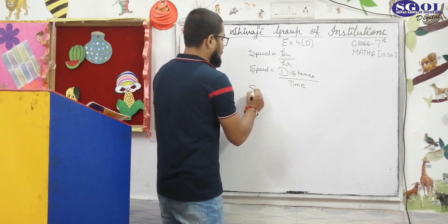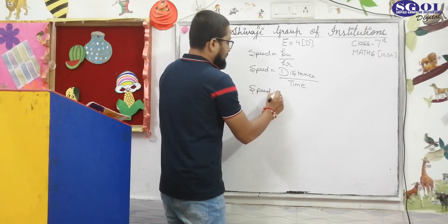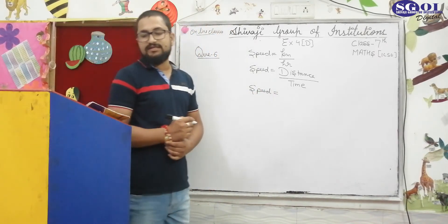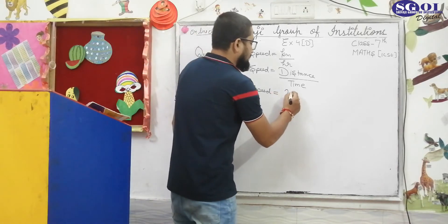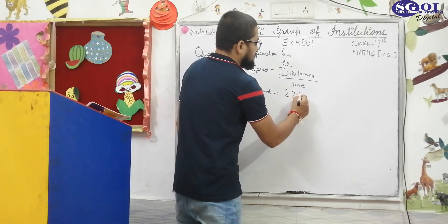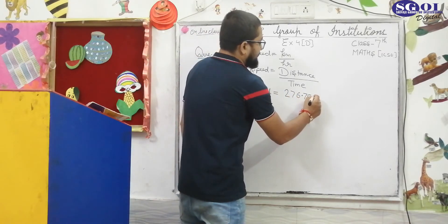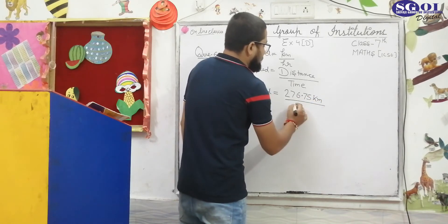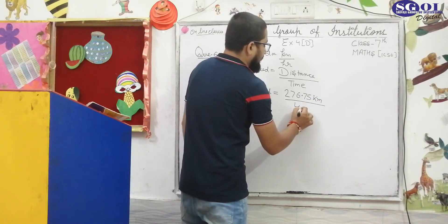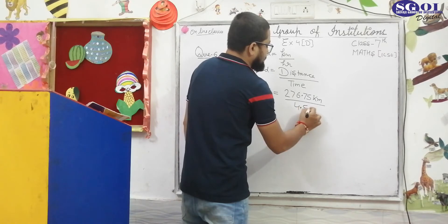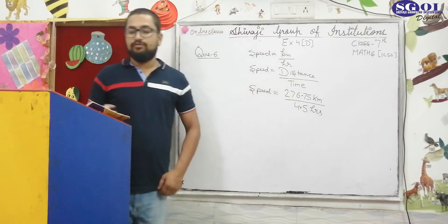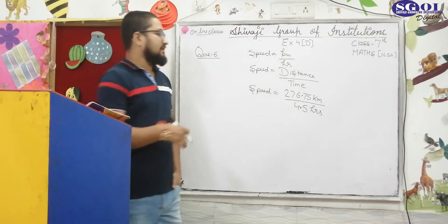Distance is given which is equal to 276.75 kilometers. Time is given which is equal to 4.5 hours. So speed equals 276.75 km divided by 4.5 hours.